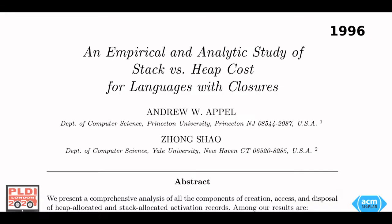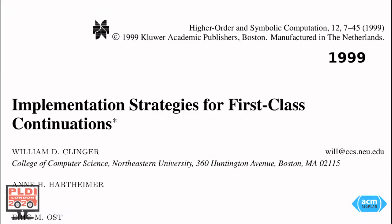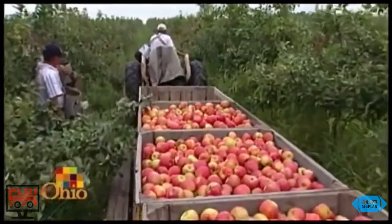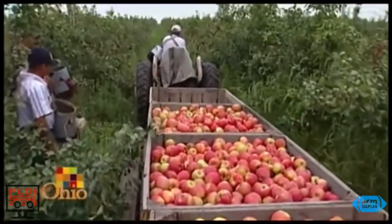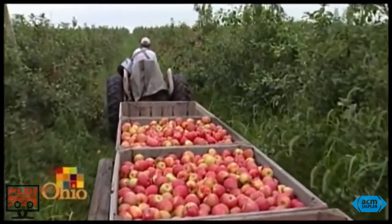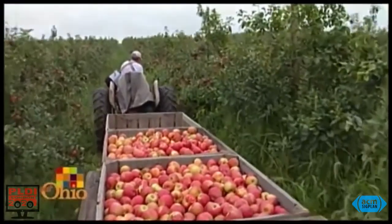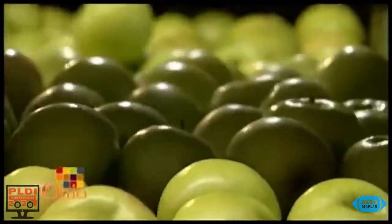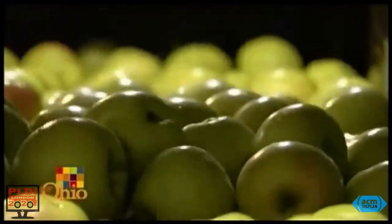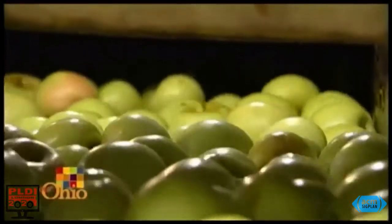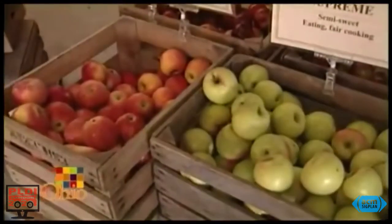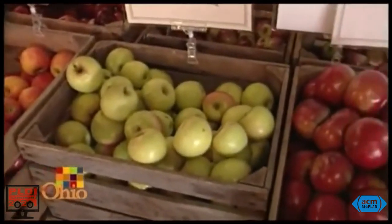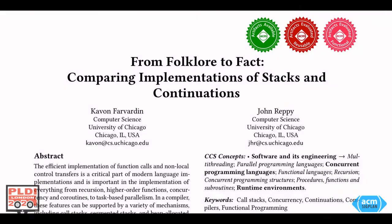Previous studies suffer from various flaws in methodology and are outdated for modern hardware. Our work attempts to remedy this situation by providing an apples-to-apples comparison of six different approaches to implementing call stacks, using a single compiler runtime system. We compare sequential performance, suitability to support advanced control flow mechanisms, and the overall complexity of their implementation.